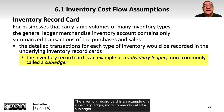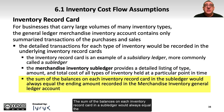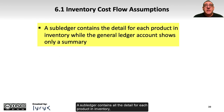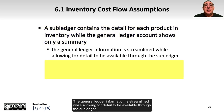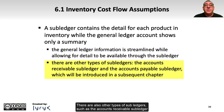The inventory record card is an example of a subsidiary ledger, more commonly called a subledger. The Merchandise Inventory subledger provides a detailed listing of the type, amount, and total cost of all types of inventory held at a particular point in time. The sum of the balances on each inventory record card in the subledger would always equal the ending amount recorded in Merchandise Inventory in the General Ledger. The General Ledger information is streamlined while allowing for detail to be available through the subledger. There are also other types of subledgers such as the Accounts Receivable subledger and Accounts Payable subledger, which will be introduced in later chapters.